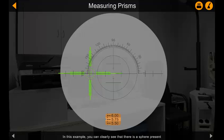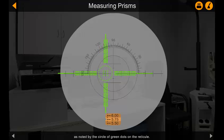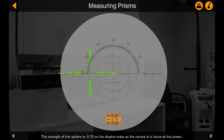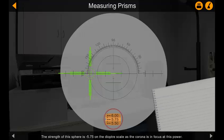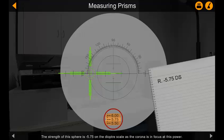In this example, you can clearly see that there is a sphere present as noted by the circle of green dots on the reticule. The strength of this sphere is minus 5.75 on the diopter scale, as the corona is in focus at this power.